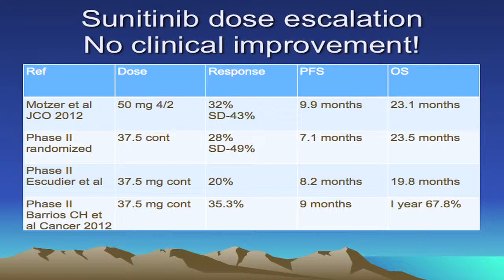Interestingly, if you look at dose intensity, it is actually somewhat higher with 37.5 mg daily compared to 50 mg over six weeks, because when calculated out per daily dose it comes to about 33.33 mg. So it may not be dose intensity per se — there might be a threshold you have to hit to actually achieve that efficacy endpoint. Two additional phase two trials looked at continuous dosing and found similar results: no different, and definitely not better than the 50 mg four weeks on/two weeks off schedule.